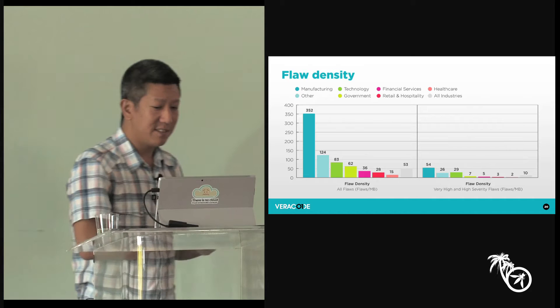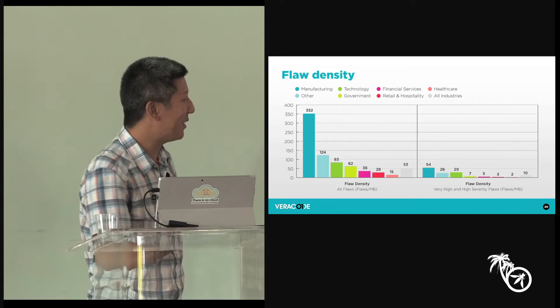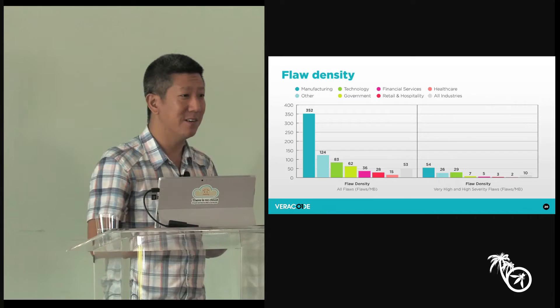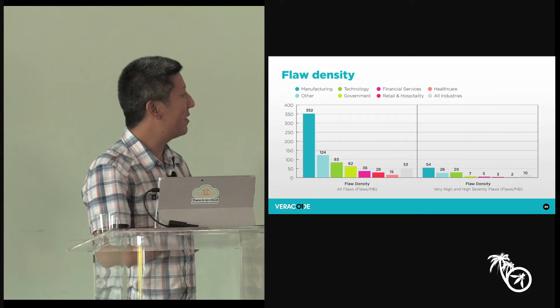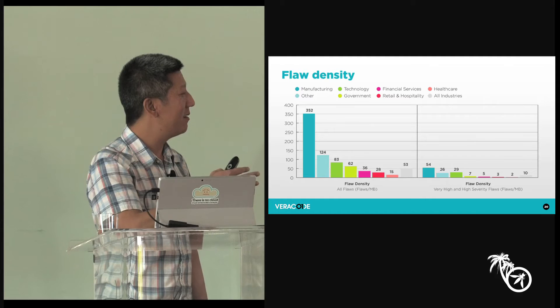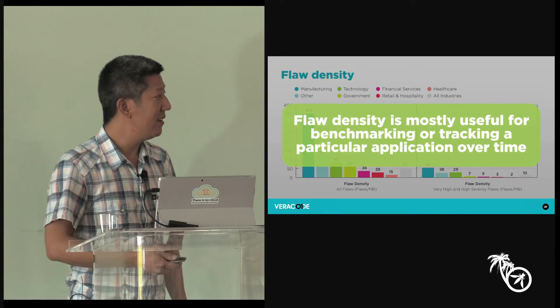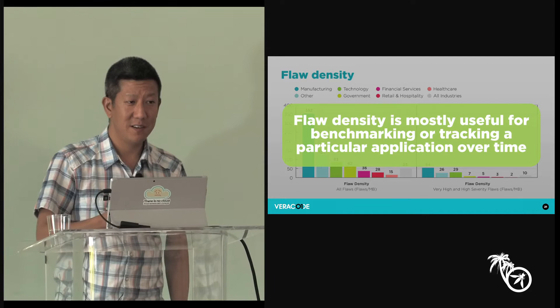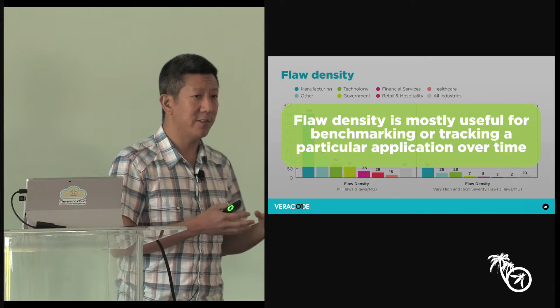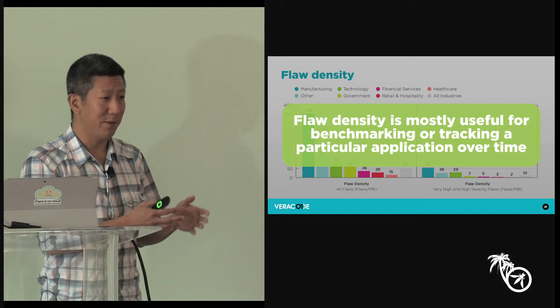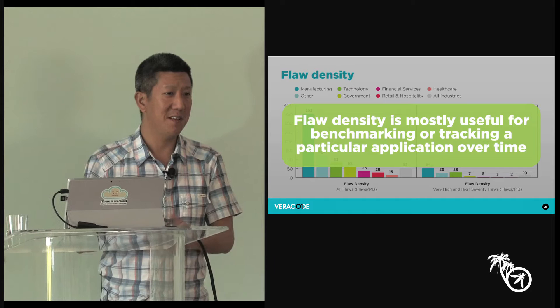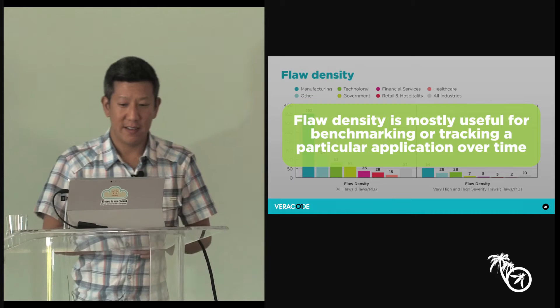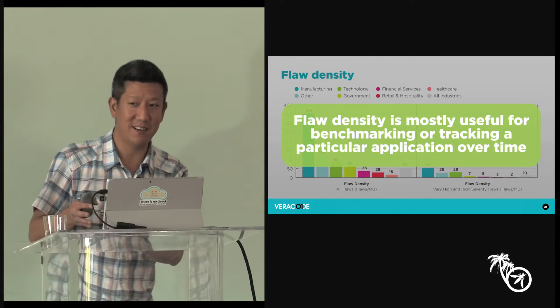When you read an article reporting that manufacturing or technology is really bad based on flaw density, keep in mind it really matters what types of languages they're using. Flaw density is useful when you want to track over time within a given population — for one application, what's my flaw density today versus a year from now? That's valuable because it's the same application and you're not conflating other factors. We'll use that to talk about remediation rates later.